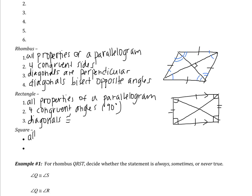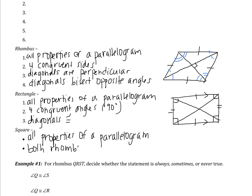A square still has all the properties of a parallelogram. And this one is really important: a square is both a rhombus and a rectangle. So a square has all the properties of a rhombus and all the properties of a rectangle. It has four congruent sides like a rhombus, four right angles like a rectangle, perpendicular diagonals like a rhombus, and congruent diagonals like a rectangle. It's a very special, very specific type of figure.